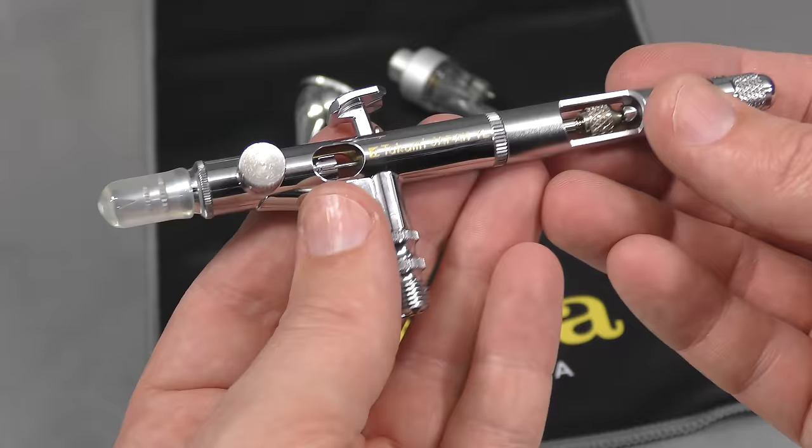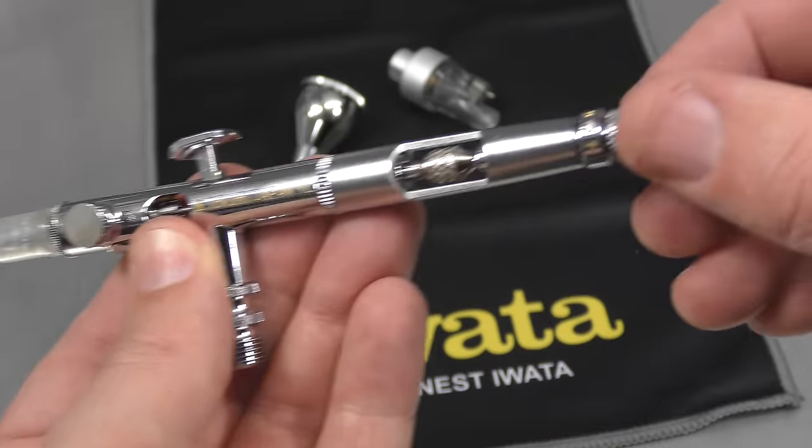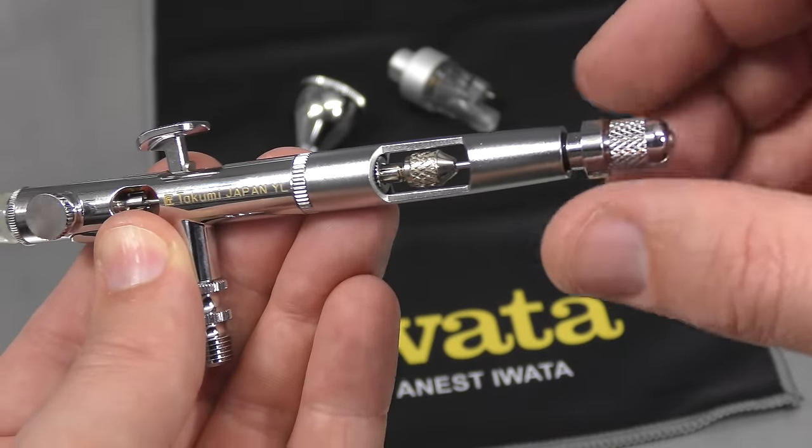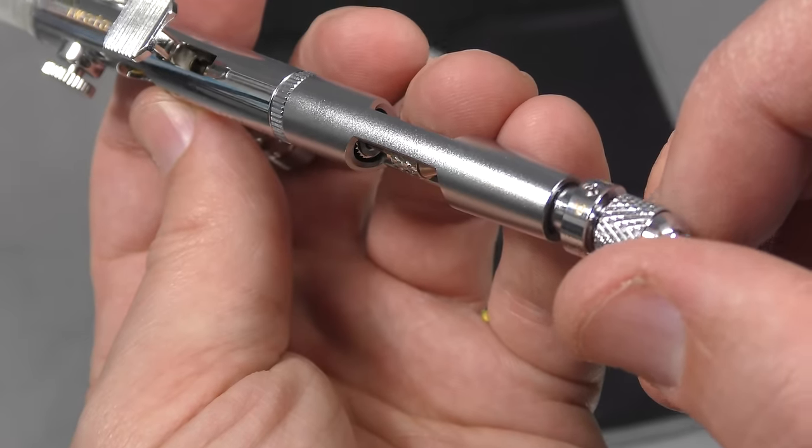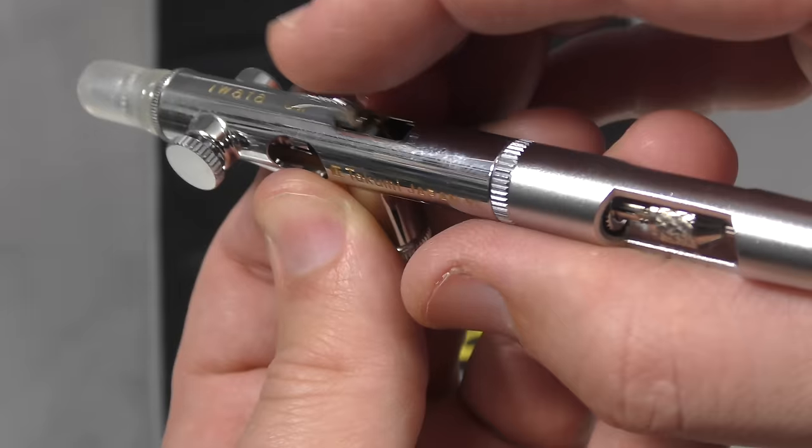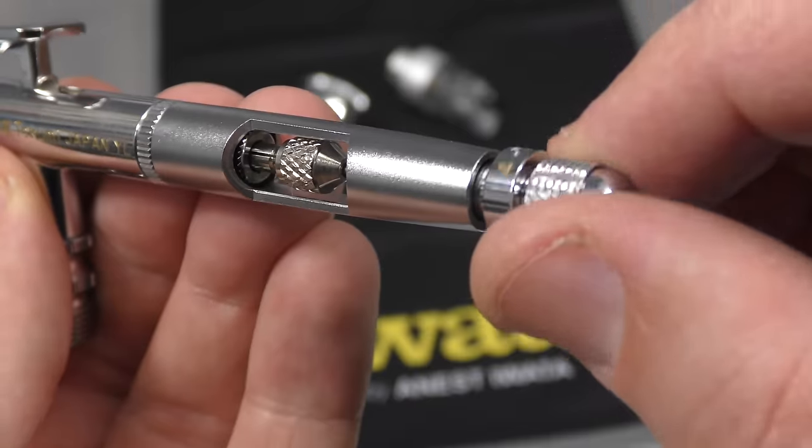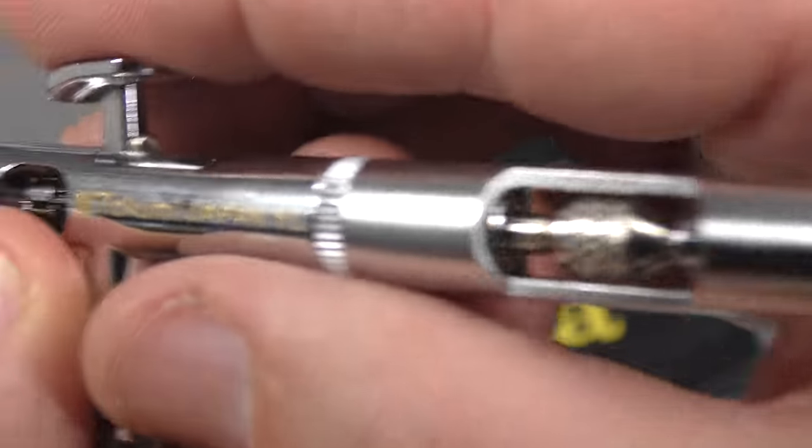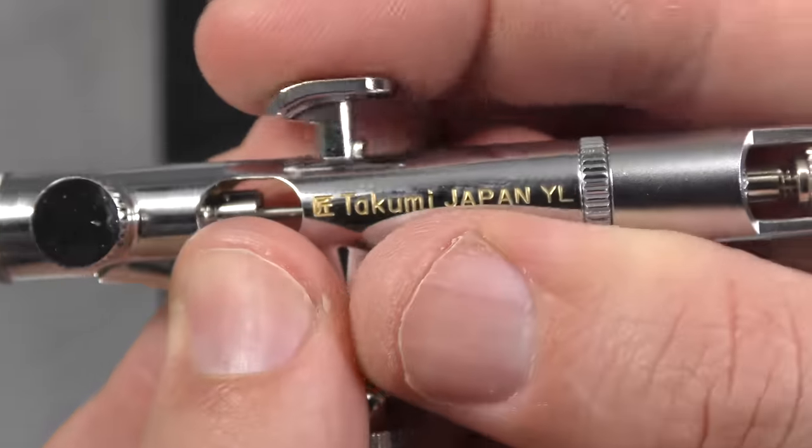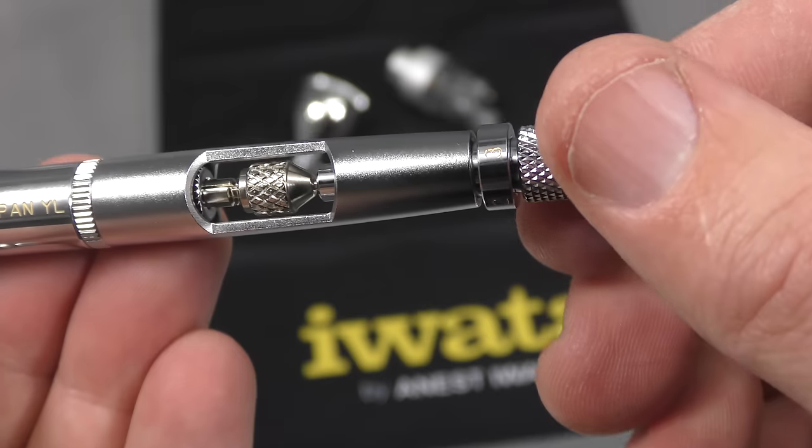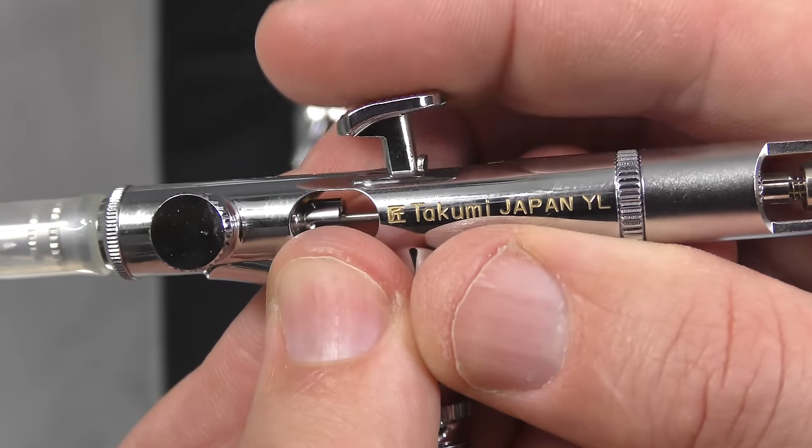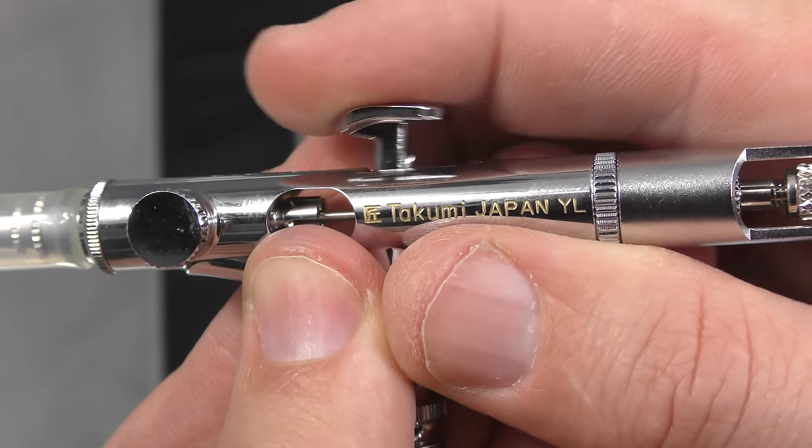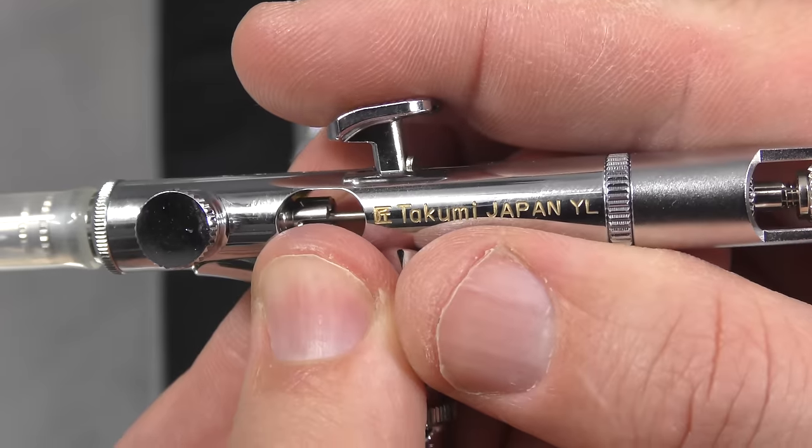A couple of things to talk about first. Got the rear here where you can wind it out. You've got settings on there marked with numbers. You can pick which way you like to set it up and you'll know that's basically how far you can pull the trigger back. If I wind that in, you can see that's now going to stop my trigger from coming all the way back. I like to have mine completely wound out and just control the trigger action. Pressing down for air, and pulling back for paint. The more you pull back, the more paint's going to come out.